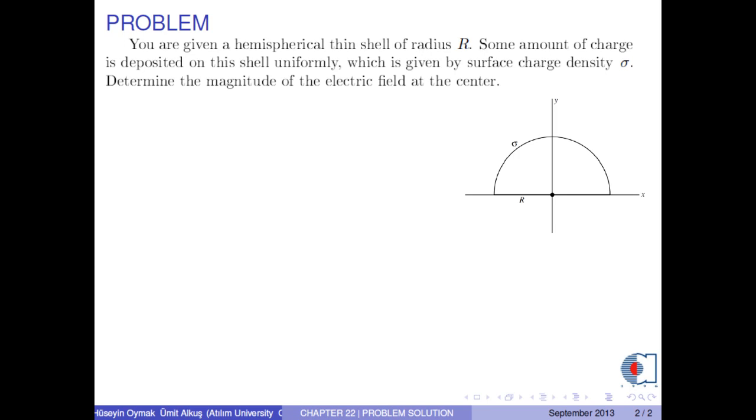You are given a hemispherical thin shell of radius R. Some amount of charge is deposited on this shell uniformly, which is given by surface charge density sigma. Determine the magnitude of the electric field at the center.